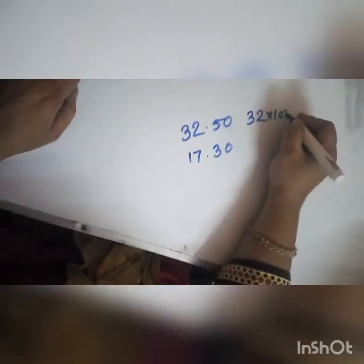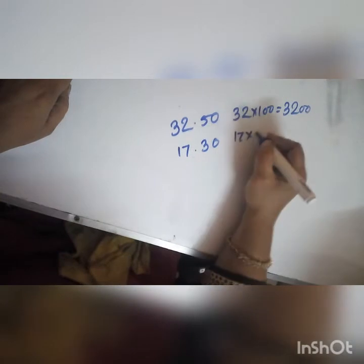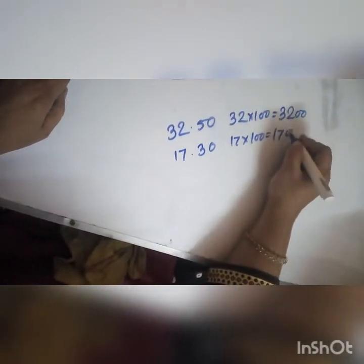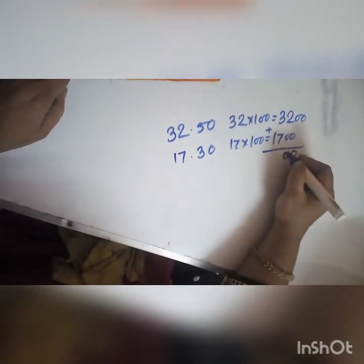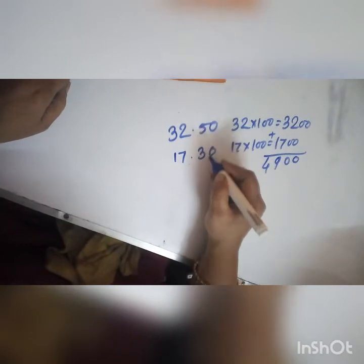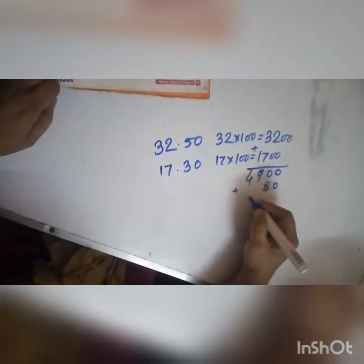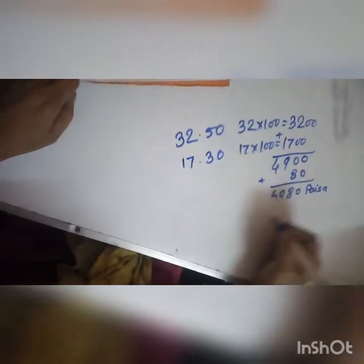We will multiply to convert. So 32 rupees becomes 3200 paisa, and 17 rupees becomes 1700 paisa. Now we add them. 7 and 2 is 9, 3 and 1 is 4 — that gives us 4900. Then adding the 50 and 80 paisa gives us 4980 paisa total. Like this, you have to solve the exercise on page 75.